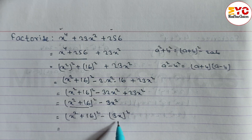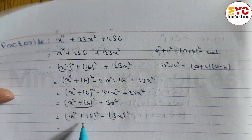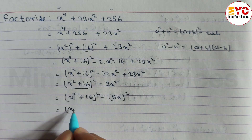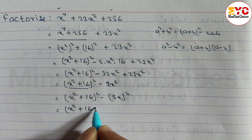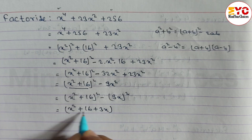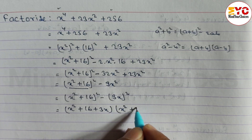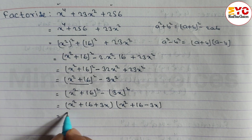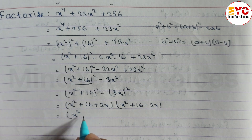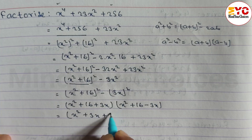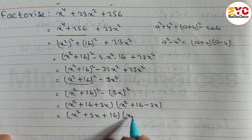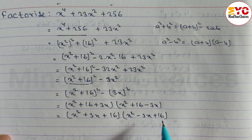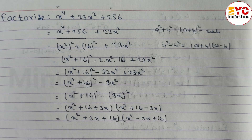So b = 3x and a = x² + 16. Applying the formula (a + b)(a − b), we get (x² + 16 + 3x)(x² + 16 − 3x). Arranging with 3x in the middle: (x² + 3x + 16)(x² − 3x + 16). This is your answer. Hope you understand how to factorize.